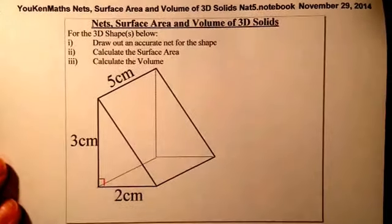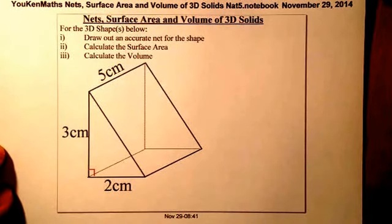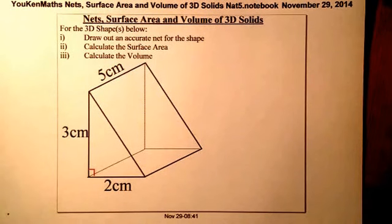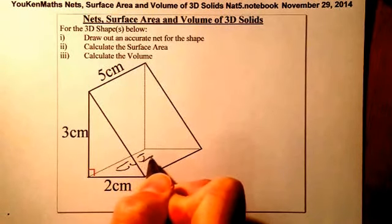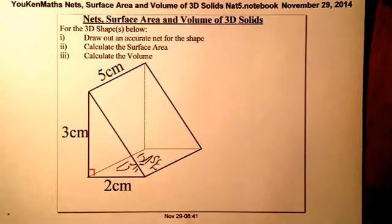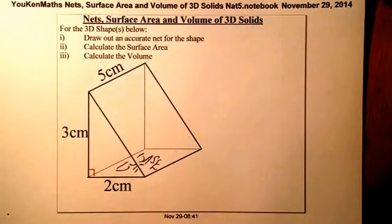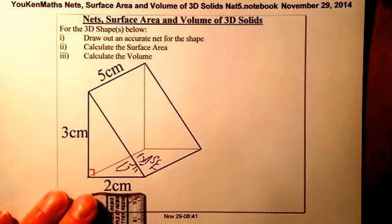What we'll look at now is a triangular prism. We've got a right-angled triangle here, and we'll work out the surface area, the volume, and before that the net of this shape. Going for the net — I'm going to first of all go for the base. So what I've got is the base sitting down here. The base is two along by five.